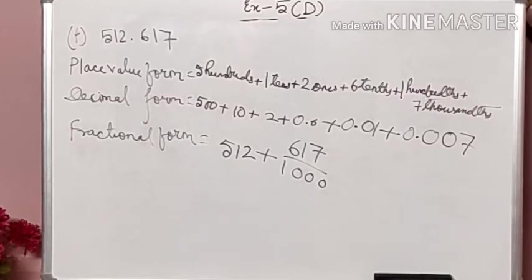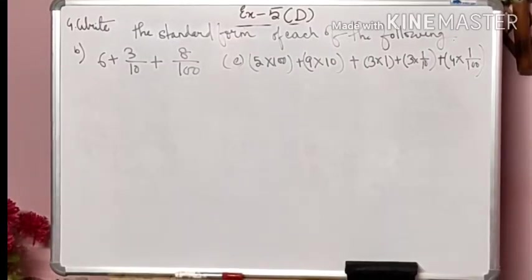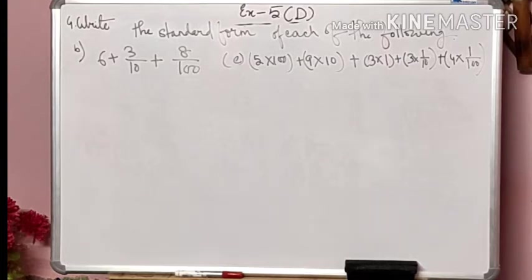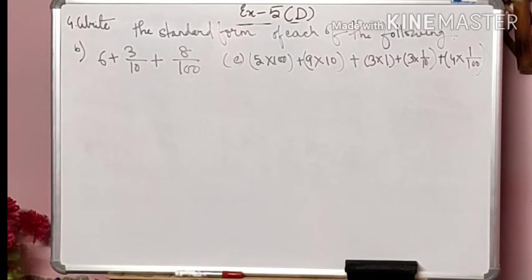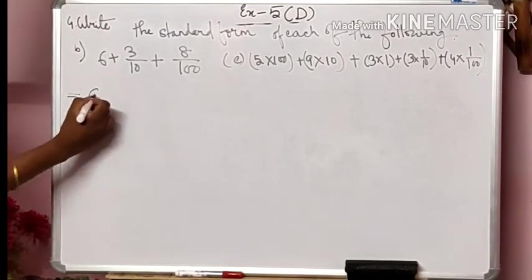I think you have got this question. After that, copy our next question. In question number 4, what is given: write the standard form of each of the following. These questions are given in expanded form — like what we did in the earlier question. Now what we have to do is convert this expanded form into its standard form. So you see this one: 6 plus 3 by 10 plus 8 by 100 — we have to convert this into its standard form.